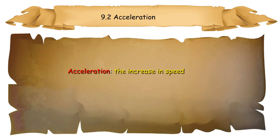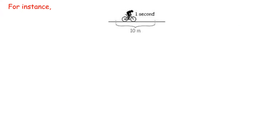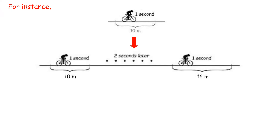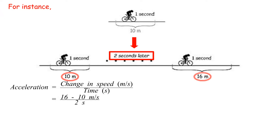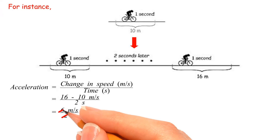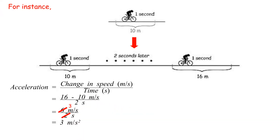9.2 Acceleration. Acceleration is the increase in speed. Deceleration is the decrease in speed. For instance, you are taking a bike race and go at a steady 10 meters per second. Now you start cycling faster and increase to 16 meters per second over the next 2 seconds. Acceleration equals change in speed over time, equals 16 minus 10 meters per second over 2 seconds, equals 6 meters per second over 2 seconds, equals 3 meters per second per second.